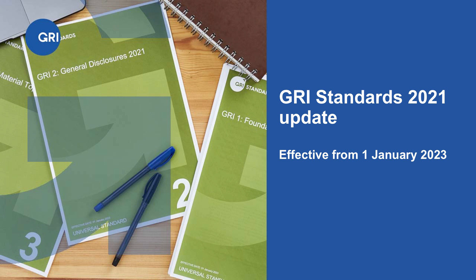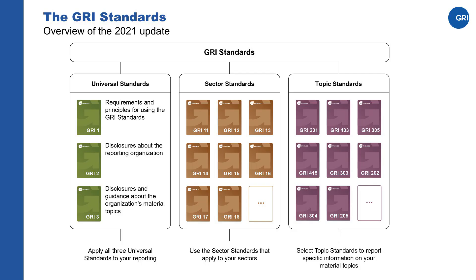In this presentation, I will walk you through the most important changes in the 2021 update. The GRI standards remain a modular system of interconnected standards, and its parts have been designed to be used together so that a comprehensive overview is formed of the impacts that an organization has on the economy, the environment, and people.